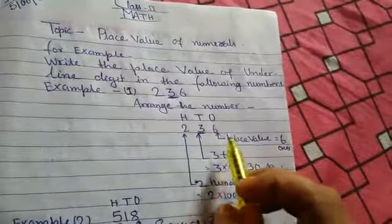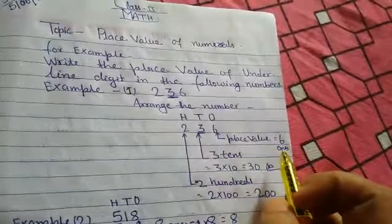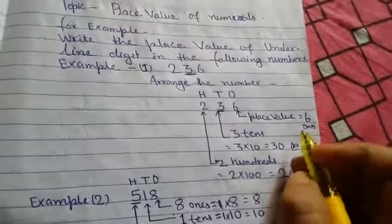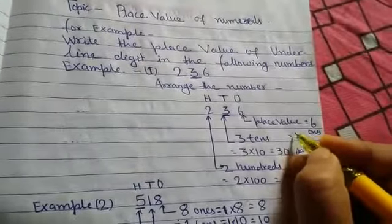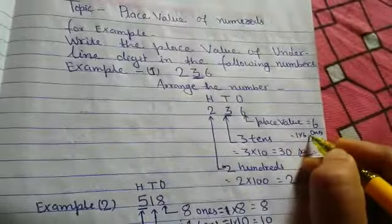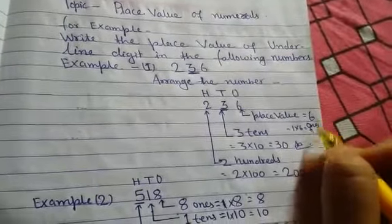So, 6's place value is what? 6 ones. 6 ones means what? 6 ones means 1 multiplied by 6. So, 6's place value is 6.